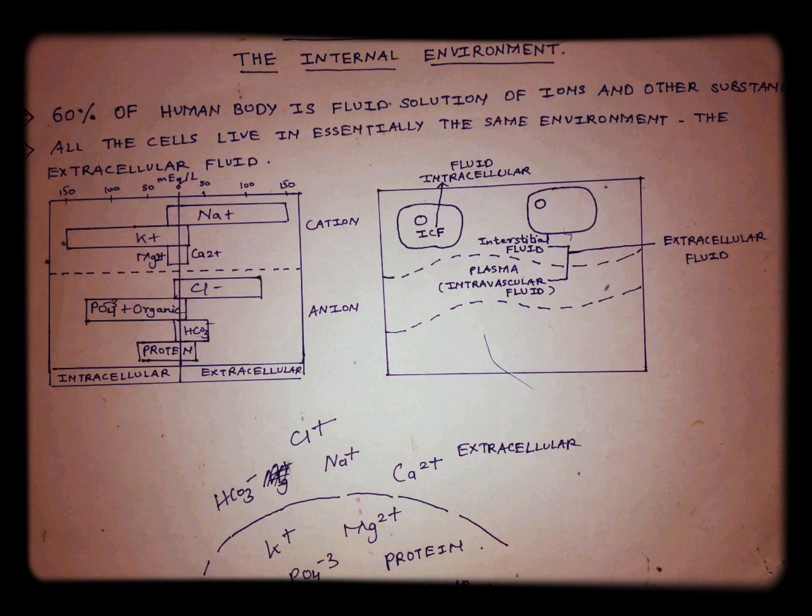The extracellular fluid contains large amounts of sodium, chloride, and bicarbonate ions, plus nutrients for the cells such as oxygen, glucose, fatty acids, and amino acids. It also contains carbon dioxide that is being transported from the cells to the lungs to be excreted, plus other cellular waste products that are being transported to the kidneys for excretion.